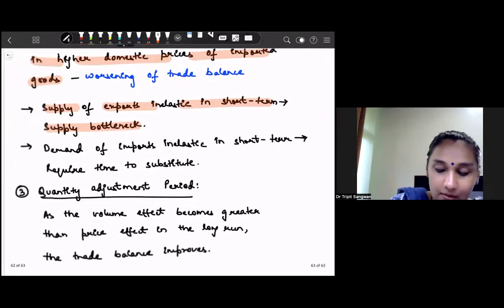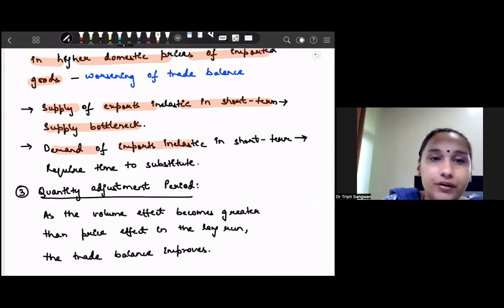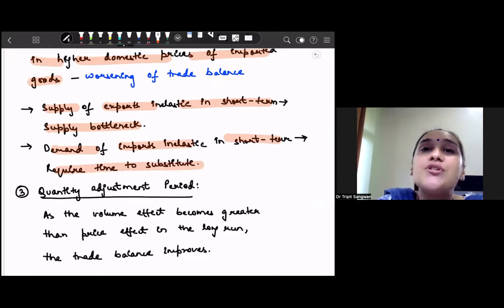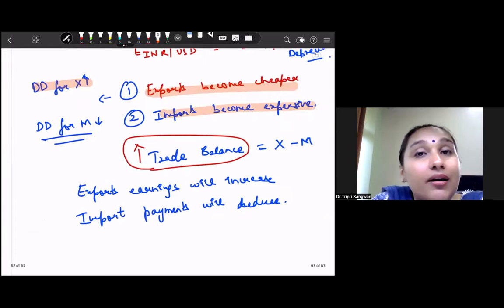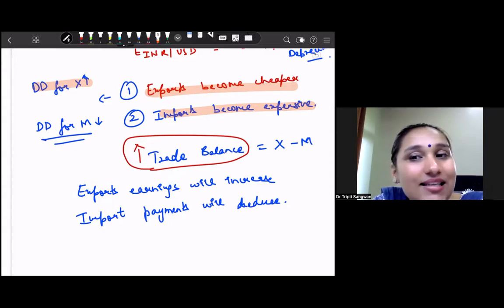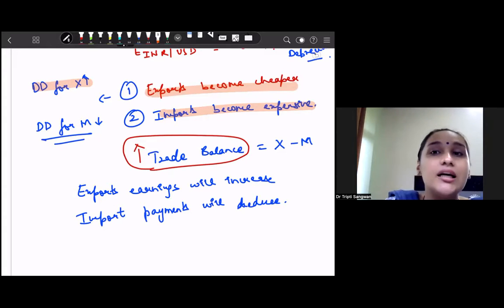Because it takes time for people to substitute one good for the other. Suppose our currency has depreciated, imports have become expensive for us, but we need some time to find cheaper substitutes for the imported goods or inputs we are importing. So during this time, until we do this, actually our import payments increase or export earnings reduce, and thus trade balance worsens.